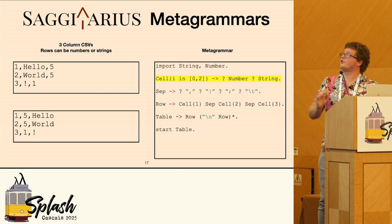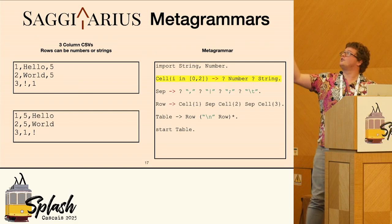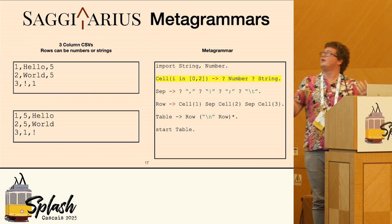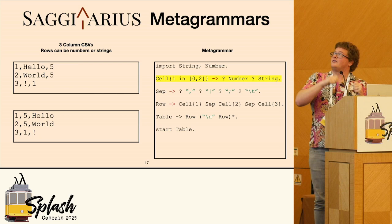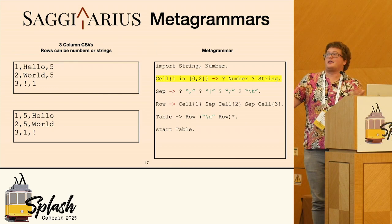But there's an issue here. This option parameter — these optional productions — is not like a choice-type operator. It's essentially saying cell can go to, and then I can have a production to number, and I can potentially have a production to string.